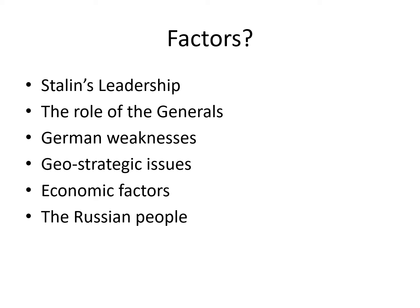If writing an essay about the Great Patriotic War, the main factors to consider are Stalin's leadership, the role of the generals, German weaknesses, geo-strategic issues, economic factors within Russia, and the Russian people themselves. The factors I would go with are Stalin's leadership, German weaknesses, the role of the generals and the Russian people combined into one factor, and economic factors as a fourth. We will be doing an essay on this topic next week.